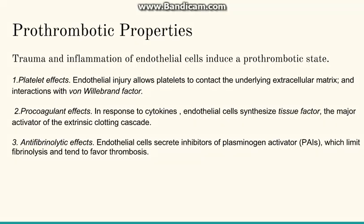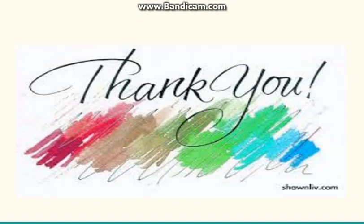When injury occurs, the endothelium exposes its extracellular matrix and von Willebrand factor, leading to pro-coagulant activities. It releases tissue factors and, in the early phases of clot formation, inhibits plasminogen activator to prevent premature clot dissolution.